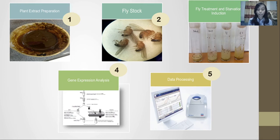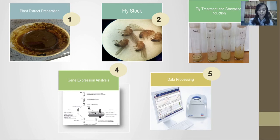In the study, we used adult male flies D. melanogaster W1118 at age of 10 days, assigned into 5 different groups, treated according to their groups, and then induced into starvation condition. After that, isolation of total RNA was conducted on all treatment groups and data obtained were processed and statistically analyzed.